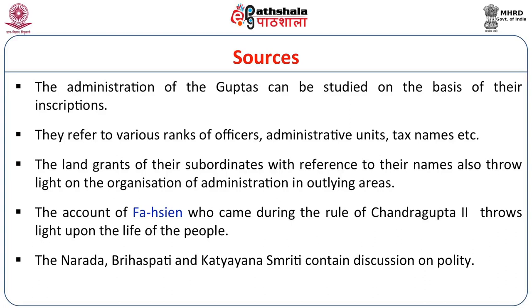The account of Faxian, a Chinese pilgrim who visited India — probably during the rule of Chandragupta II — is another source. All Chinese pilgrims came to India to study in monasteries and copy Buddhist texts to bring to their own country. Though Faxian is not concerned with political matters and does not even name the contemporary Gupta ruler Chandragupta II, he records the life of common people from which we can get some information regarding life in the Gupta period.